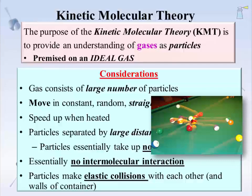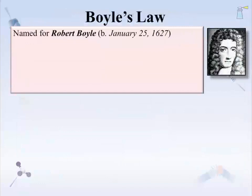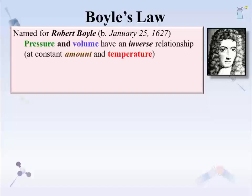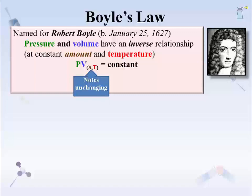The first of those laws is named after the 17th century natural philosopher Robert Boyle. The description of the law is that pressure and volume have an inverse relationship if the properties of amount and temperature are held constant. Mathematically, that is P times V equals a constant. The n and T in the subscript indicate that amount in moles and temperature are held constant.